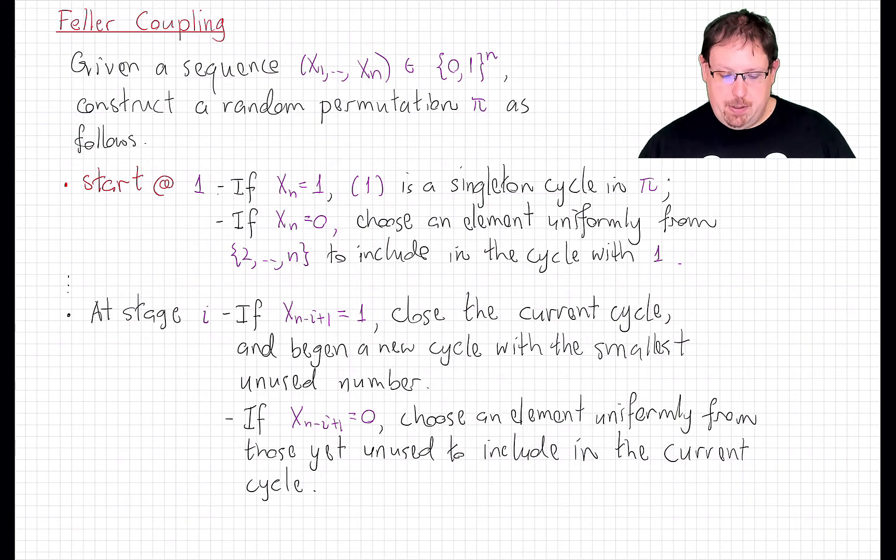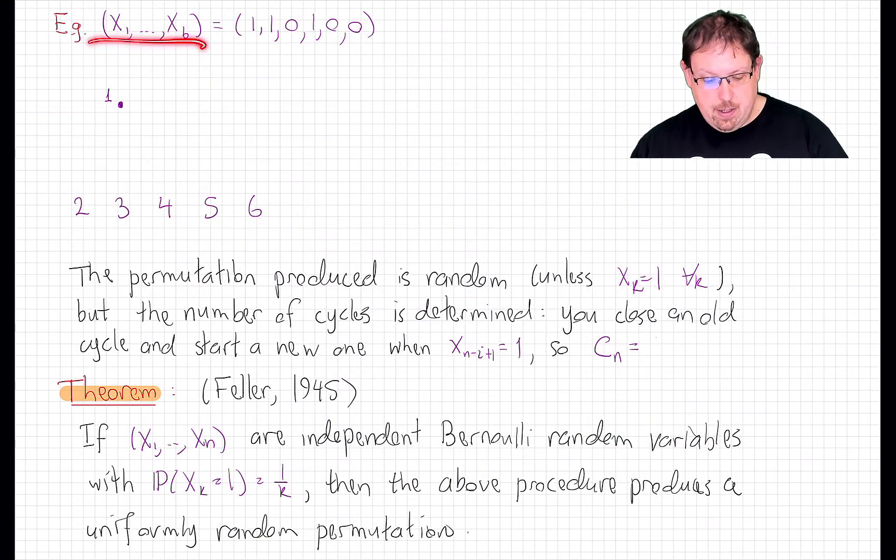Let's do an example to see how this works. Here's a sequence of length 6 of 1s and 0s. Following this algorithm, we start with 1. We look at the end of the sequence. It's a 0. That means that we don't stop here. We now choose uniformly at random from among the five remaining numbers. I'm going to go ahead and randomly choose 5. That's in a cycle with 1.